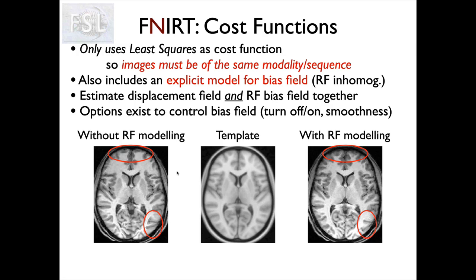That bias field modeling is something we build into our nonlinear cost function and it really helps. We can also turn it off as an option - for instance, if you were dealing with quantitative images with a T1 relaxometry value you might want to turn it off to keep those values quantitative. For the kinds of things we normally deal with we would leave it on. Even if we've done bias field correction before, it's still useful - if there was nothing left to model it will just model nothing and still give a good registration; if there was any residual bias field it will help.